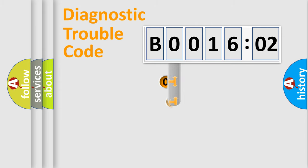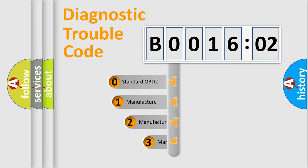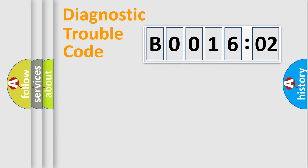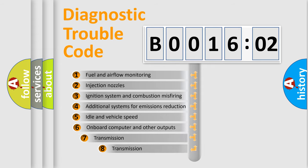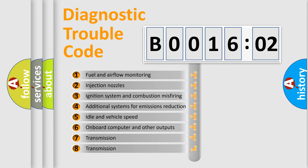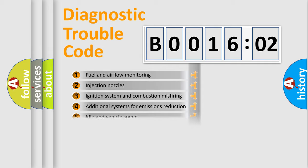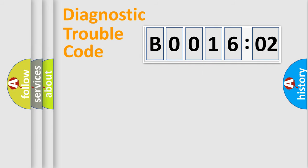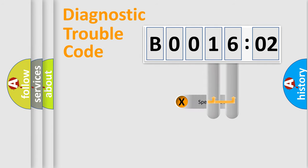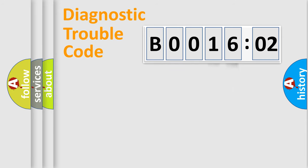This distribution is defined in the first character of the code. If the second character is expressed as zero, it is a standardized error. In the case of numbers 1, 2, or 3, it is a more manufacturer-specific expression of the car-specific error. The third character specifies a subset of errors. The distribution shown is valid only for the standardized DTC code. Only the last two characters define the specific fault of the group.